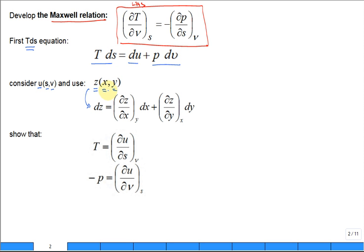Making the substitutions: every place you see Z, replace with U; every place you see X, replace with S; and every place you see Y, replace with V. Then bring forward the relationship such that DZ equals DU.